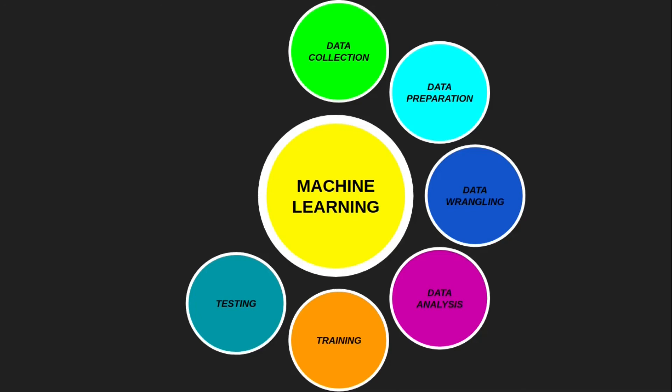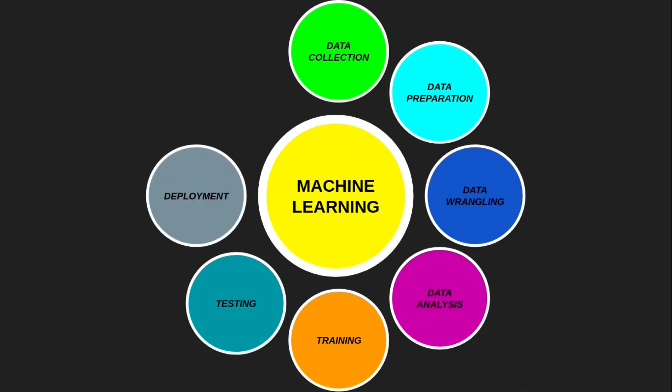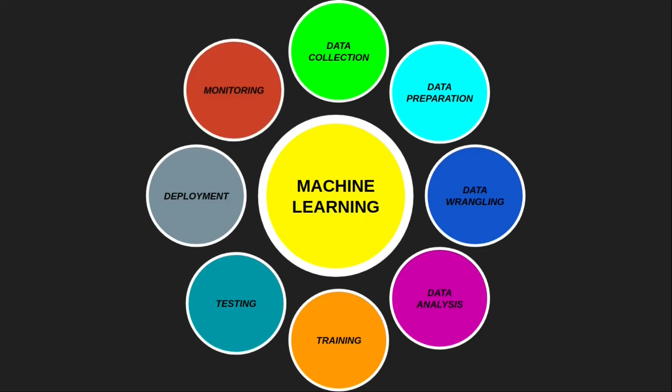The seventh step is deployment. In this step of the machine learning life cycle, we deploy the machine learning model in the real world, where it makes predictions and determines the performance of the machine. The last step is monitoring — we monitor the model in the real world. It will also learn from future data and then again go for training, testing, and deployment. So this is a cyclic process.